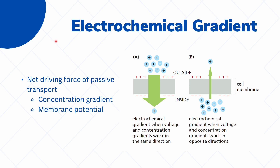Now let's focus more on passive transport. First, let's talk about the electrochemical gradient, which is the net driving force of passive transport. In addition to the concentration gradient, we must also remember that our cell membranes have membrane potential — the outside is positively charged and the inside is negatively charged — and both of these come into play when we talk about passive transport.